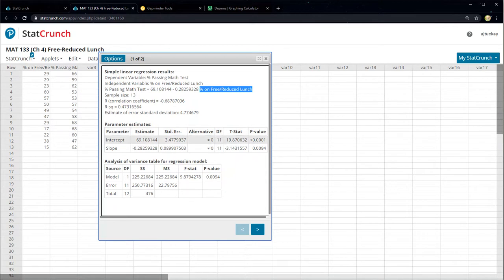The other way you can see it is down here in the table. It tells you that the intercept, which is the b, is 69.108, and the slope, which is a, is negative 0.283. So you can get it from there also.